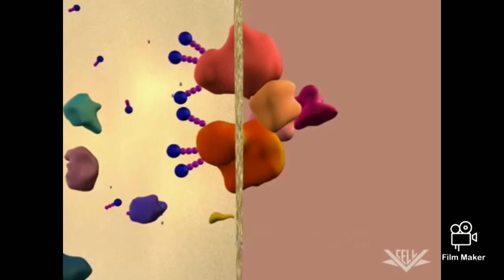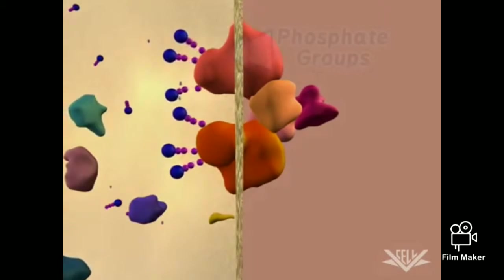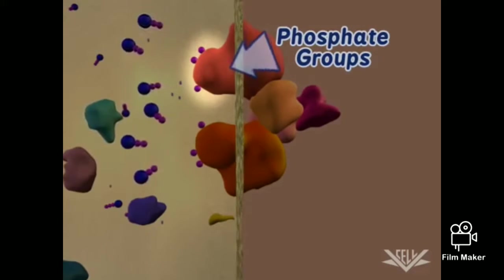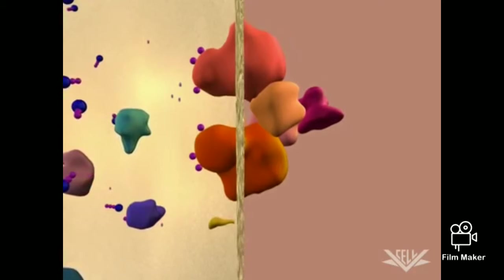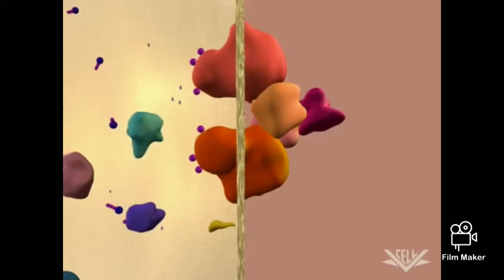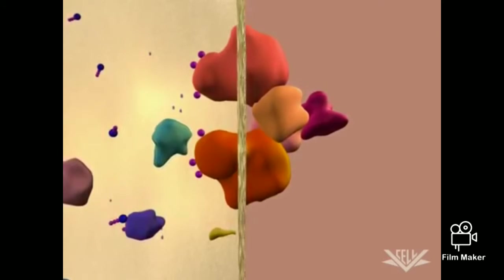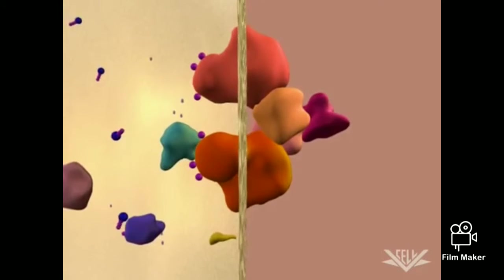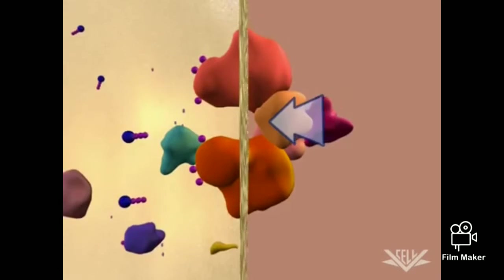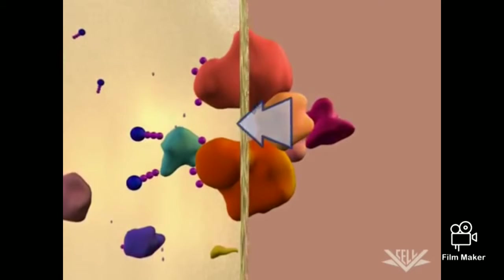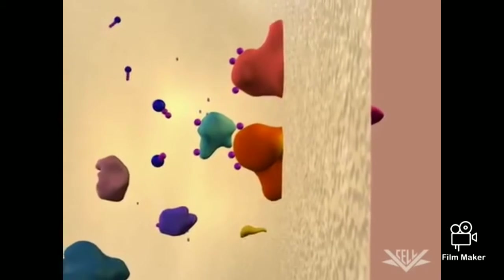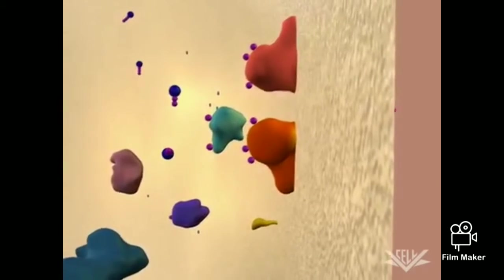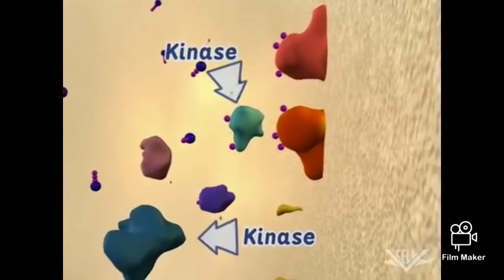This phosphorylation event sets off a cascade of molecular events. The activated receptor protein then adds a phosphate group to another closely associated protein, effectively passing the signal from the receptor to the next step in the signal pathway.